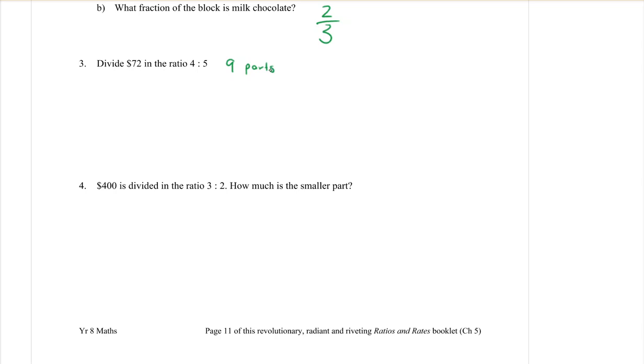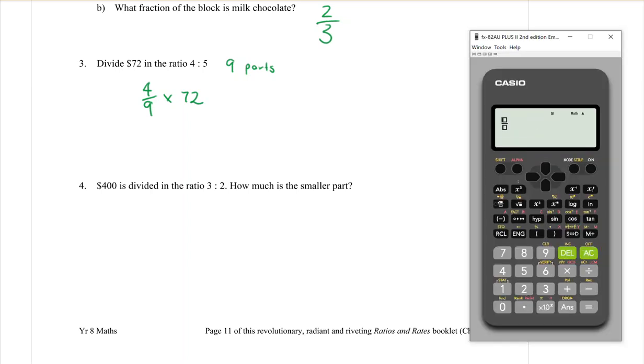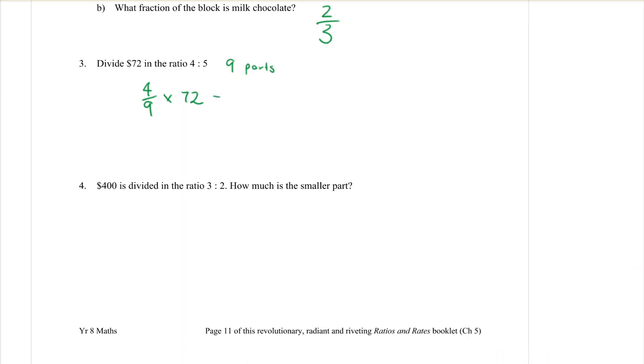Parts. That's very important that you do that first. Then the first person gets a fraction of 4 out of the 9 parts. If we're dividing up $72, all I have to do is multiply that by 72. Then I get my calculator out and I go 4 over 9 times 72. That makes $32.